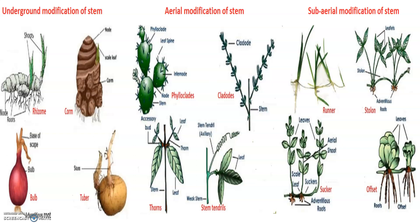Underground stems of some plants such as grasses and strawberry spread into new niches where older parts die and new plants are formed. In plants like mint and jasmine, a slender lateral branch arises from the base of the main axis and after growing for some time, bends downward to touch the ground. A lateral branch with short internodes and each node bearing a rosette of leaves or a tuft of roots is found in aquatic plants like Pistia or Eichhornia. In banana, pineapple and chrysanthemum, lateral branches originate from the basal underground portion of the main stem, grow horizontally and then come out obliquely upwards, giving rise to a tuft of leafy shoots.